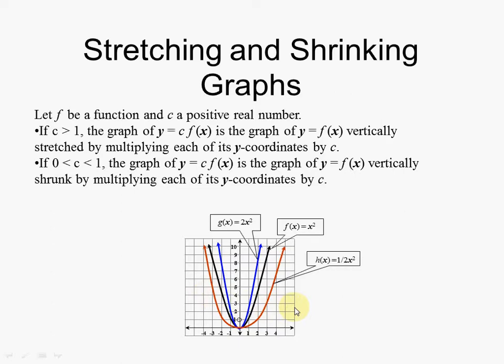Once you have a number between 0 and 1 — that could be numbers like 4 over 5, 7 over 8, or 19 over 2000 — these numbers are all between 0 and 1, and they will cause your function to vertically compress.